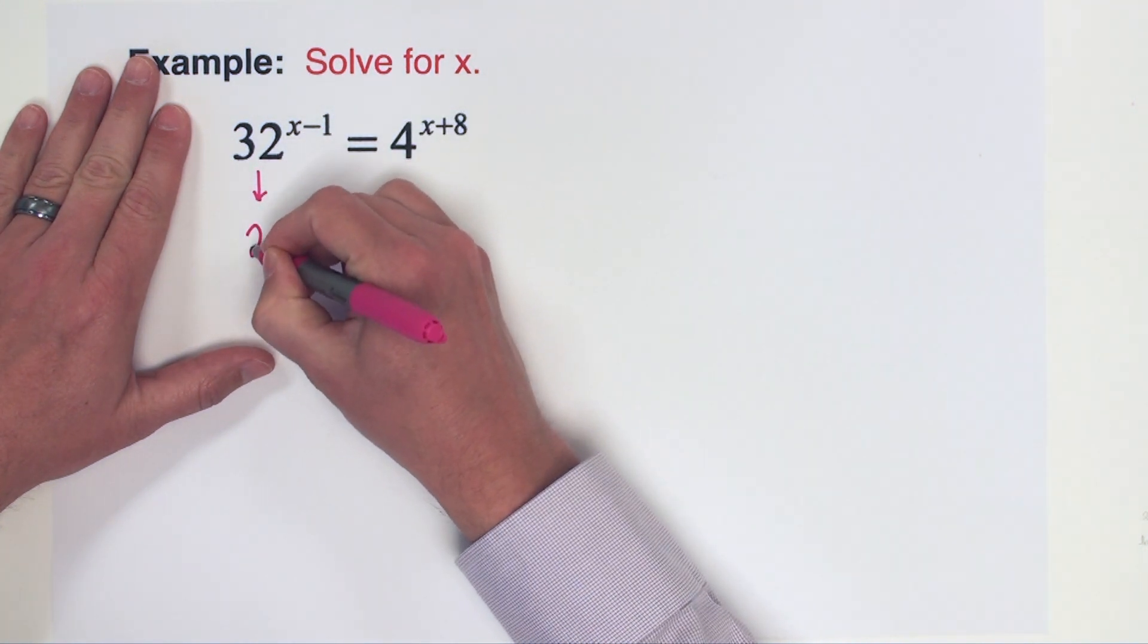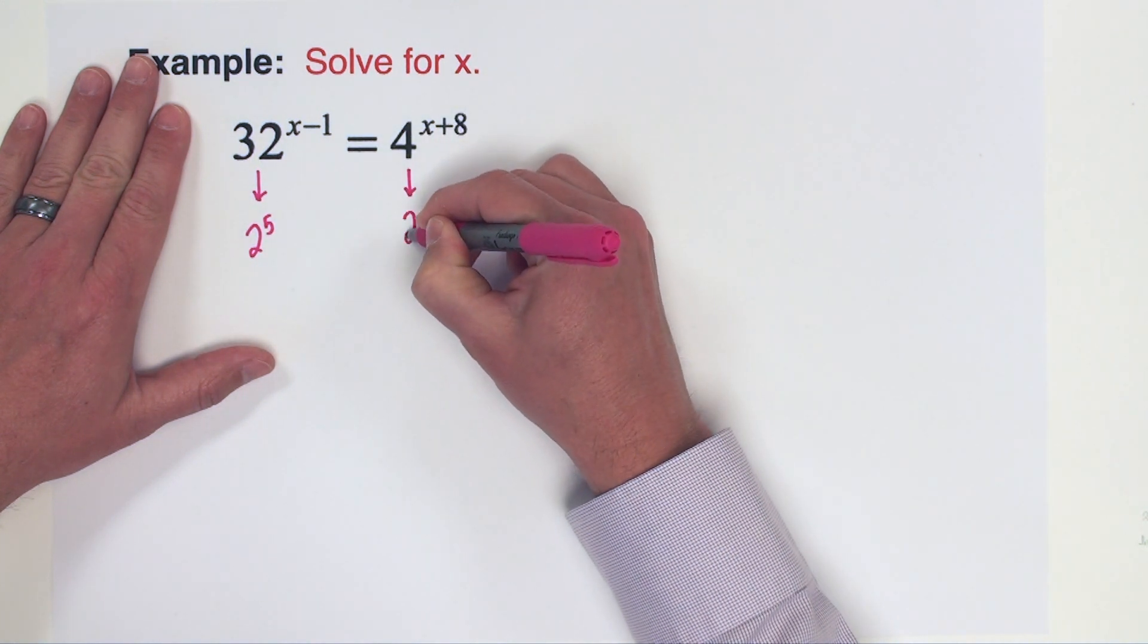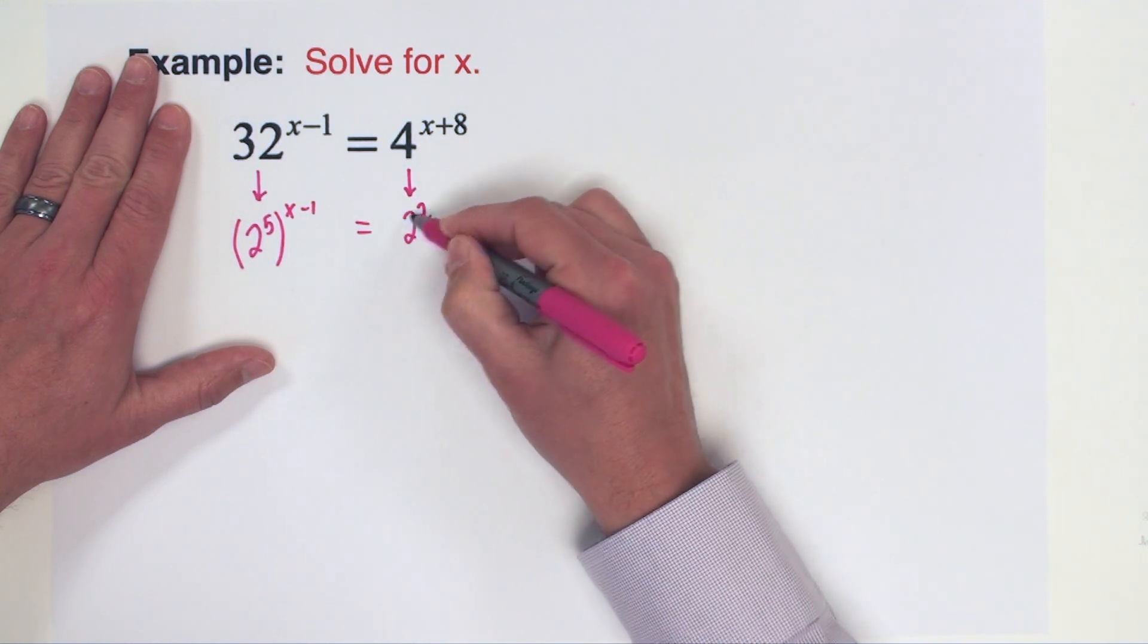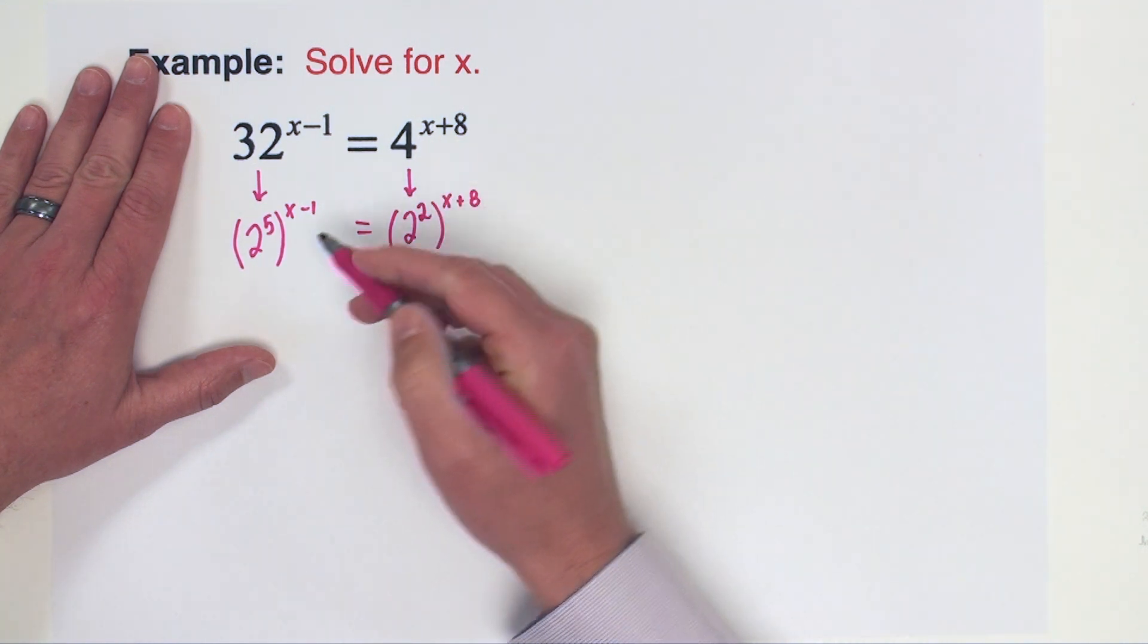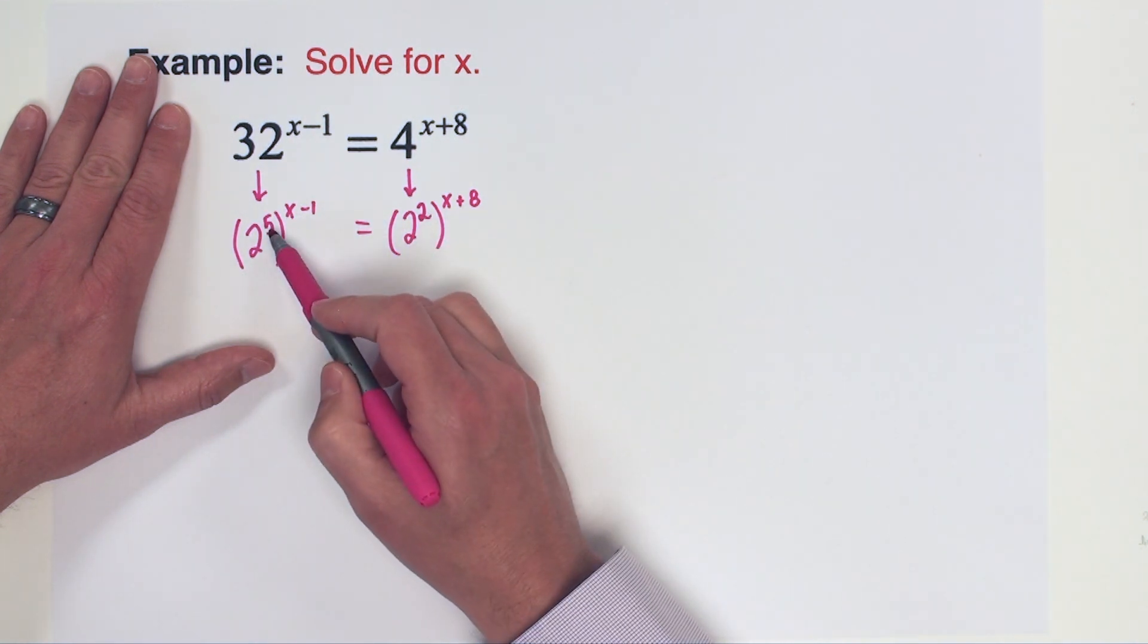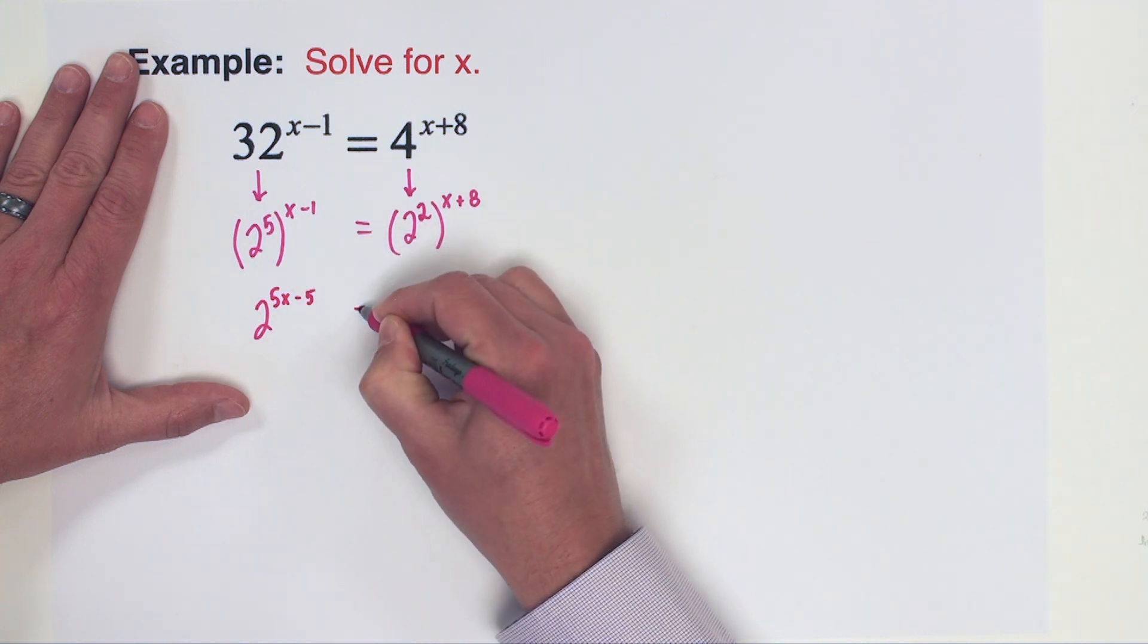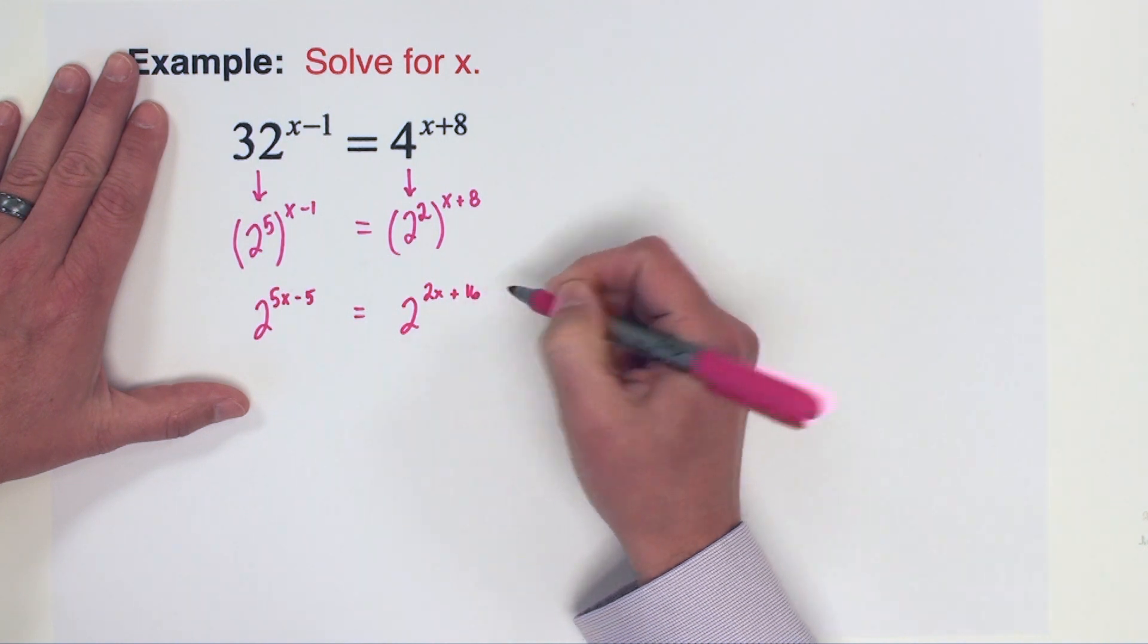When I look at 32 and 4, I recognize them both as powers of 2. 32 is the same as 2 to the fifth power, and 4 is the same as 2 to the second power. If we leave the original exponents as they are, we now have the rewritten equation like this.